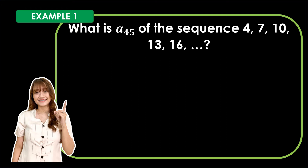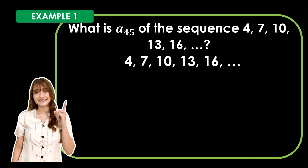To answer the problem, let us determine the given sequence: 4, 7, 10, 13, 16, and so on. We need the arithmetic sequence formula, which is a sub n is equal to a sub 1 plus the quantity n minus 1 times d. To answer the problem, we need to determine the first term (a sub 1), the term's location (n), and the common difference (d).